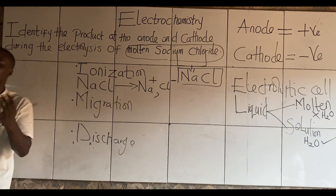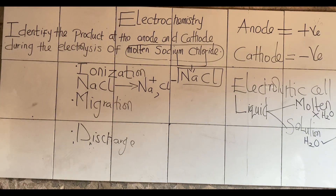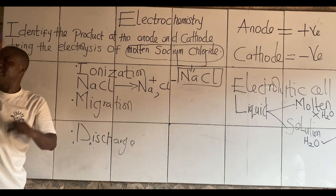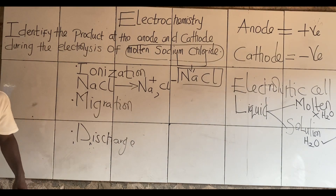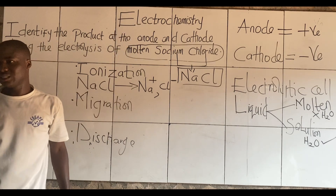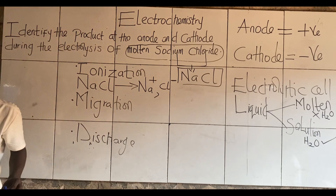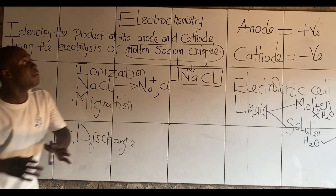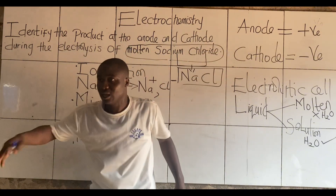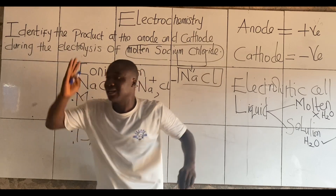We are done with step one — ionization. What's step two? Migration. So after we form these ions, we want to migrate them. We are migrating them to these terminals — the anodes and cathodes. How do I migrate them? We have to understand why we migrate them, and we have to go back to physics.